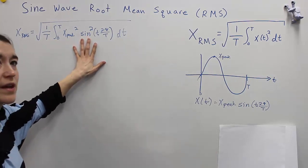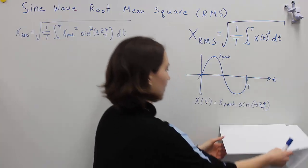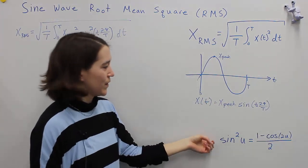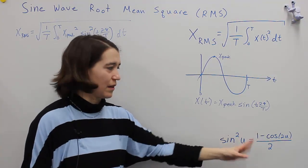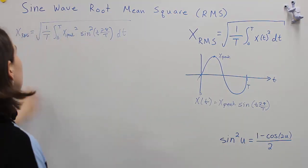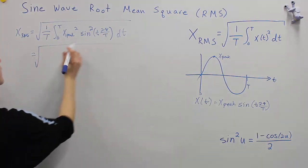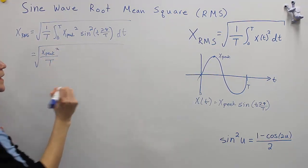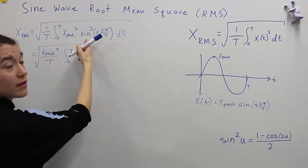The sine squared that's left is not really nice to work with, but we can use a trig identity, which you can look up in a table. The trig identity for sine squared is equal to a value which is a little bit easier to work with in terms of integrals. We're going to take that, plug it in, and move that over. So now we have xpeak squared over T, and the integral from 0 to T of this value.